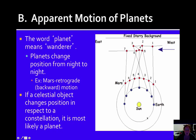If a celestial object changes position in respect to a constellation, it's most likely a planet. If a planet looks to be changing position over the course of nights, stars are so far away that they never really appear to be moving in that kind of fashion. If something looks like it's moving from night to night, that's why it's called a wanderer from back in the day. This is because it's a planet.